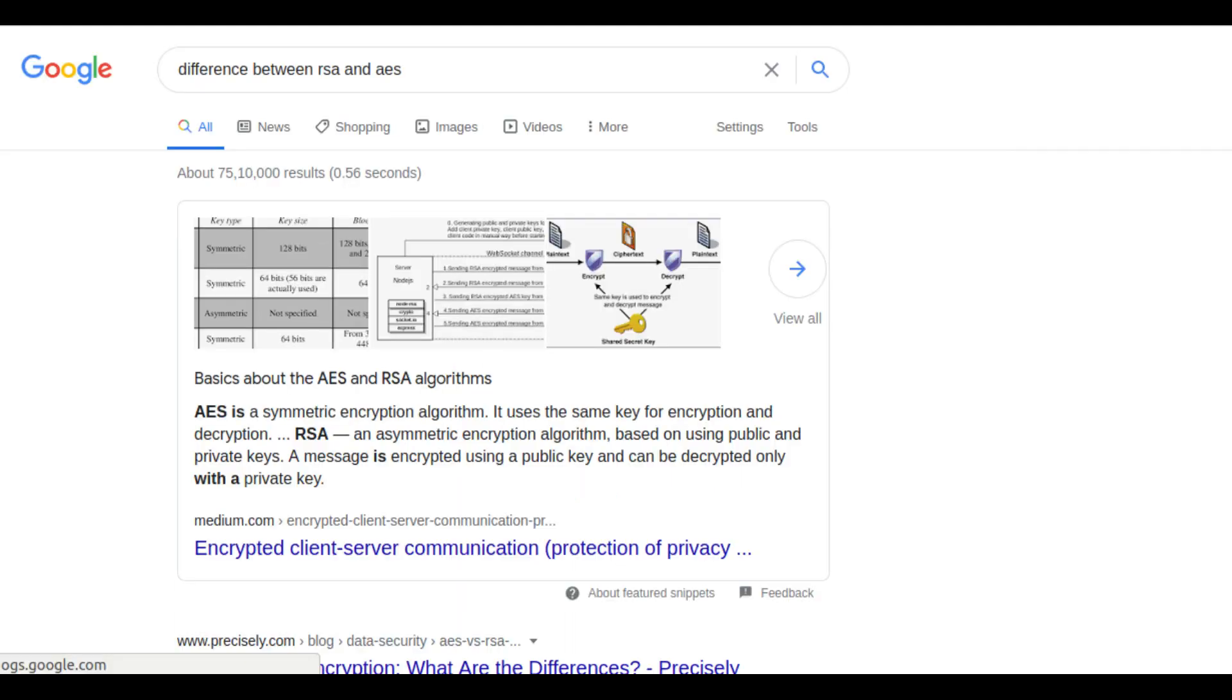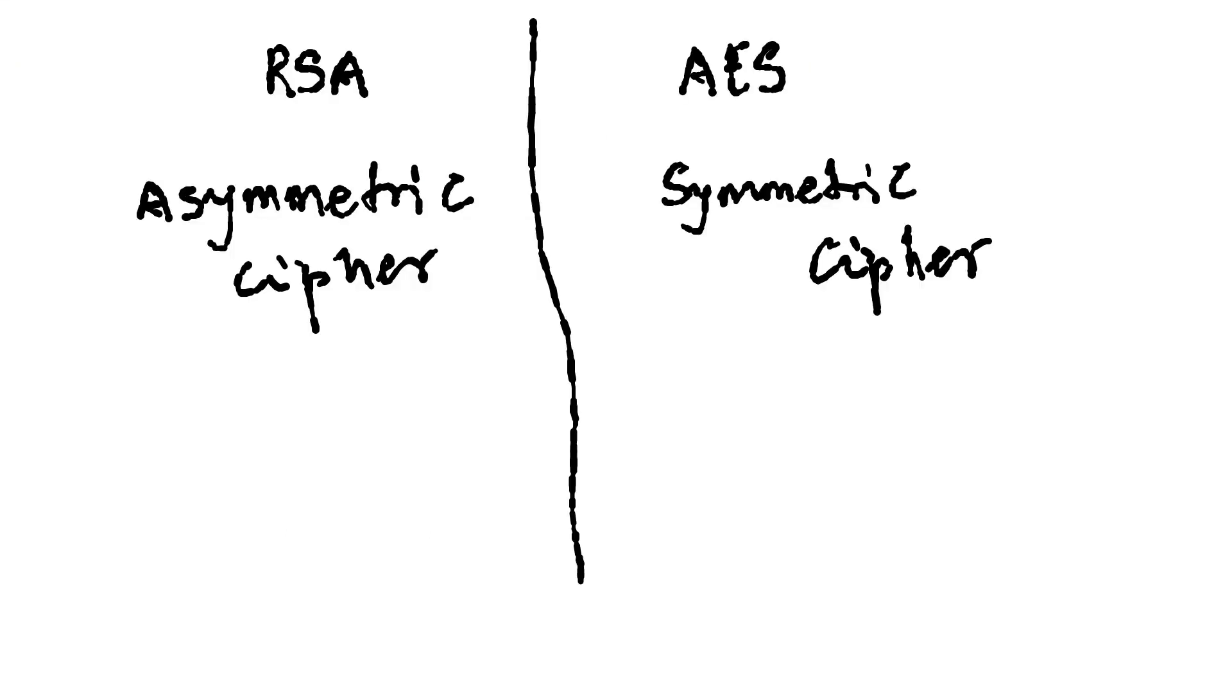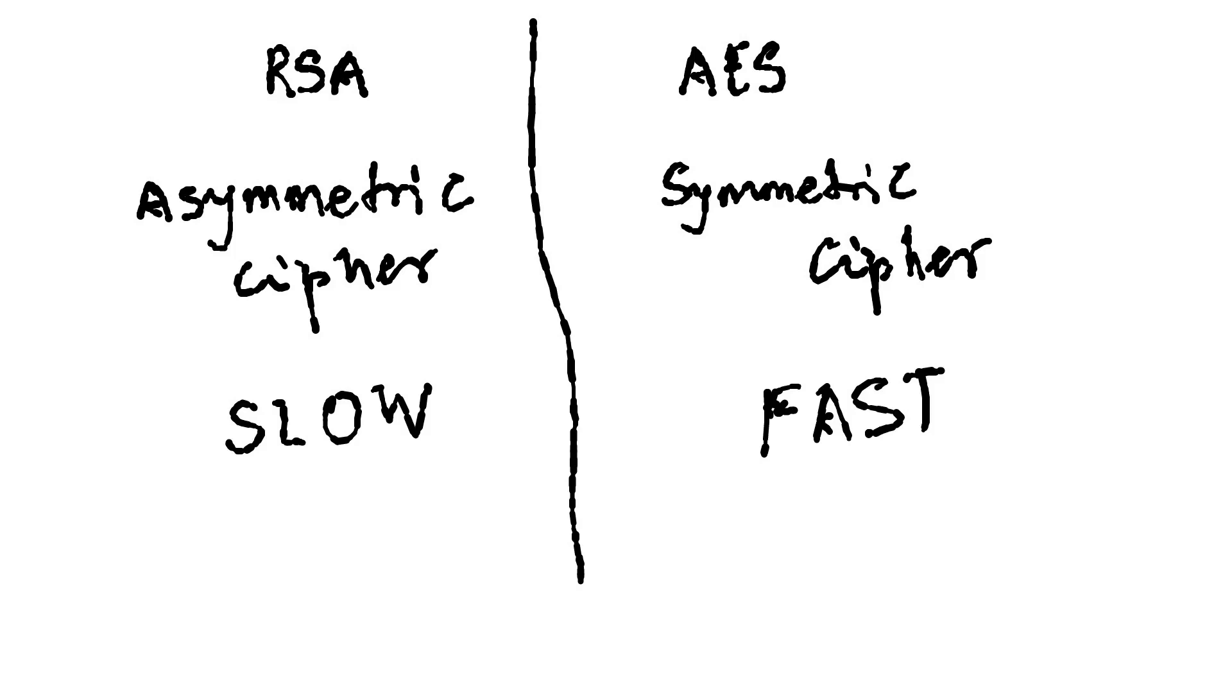If we google the differences between them, the common results that you will get is RSA is an asymmetric cipher and AES is a symmetric cipher. RSA is slow and AES is fast. But these are quite shallow definitions.